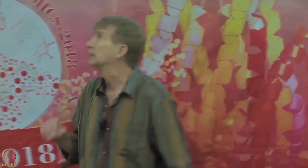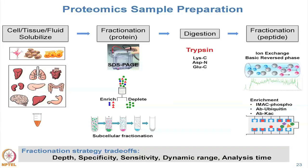In proteomics, these are some of the basic considerations for designing your experiment. We quite often start with cells, tissue, or fluid such as blood. There is a set of separations to choose, including fractionation at the protein level or enrichment or depletion. For example, if you care about mitochondria you might enrich that subcellular fraction. From the standpoint of proteogenomics, we do not do any fractionation at the protein level.